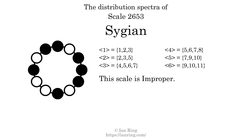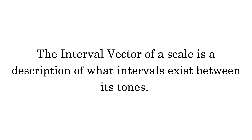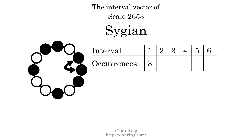The interval vector of a scale is a description of what intervals exist between its tones. There are three intervals with the size of one semitone. They are here, here, and here. There are four intervals with the size of two semitones. They are here, here, here, and here. There are five intervals with the size of three semitones. They are here, here, here, here, and here.